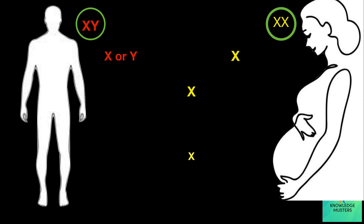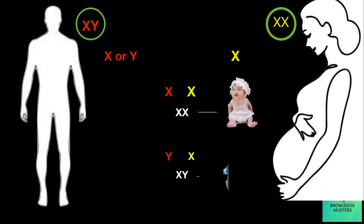If the male contributes X, the zygote will be XX — that will be a girl. If the male contributes Y, the zygote will be XY — that will be a boy.